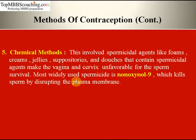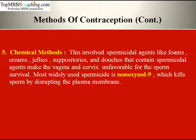Chemical methods involve spermicidal agents like foams, creams, jellies, suppositories and douches that make the vaginal cervix unfavorable for sperm survival. These contraceptives are introduced into the vagina prior to sex. The most widely used spermicide is nonoxynol-9, which kills sperm by disrupting the plasma membrane. It also decreases the incidence of chlamydia and gonorrhea. Spermicide is most effective when used together with a diaphragm or condom.